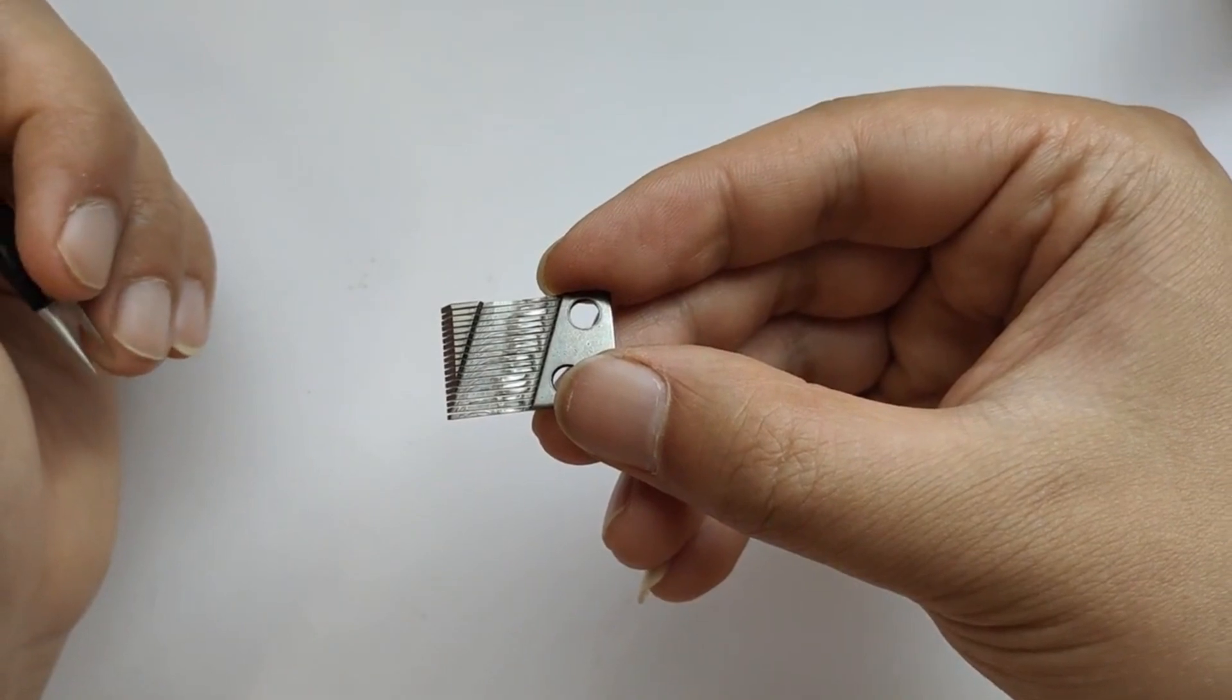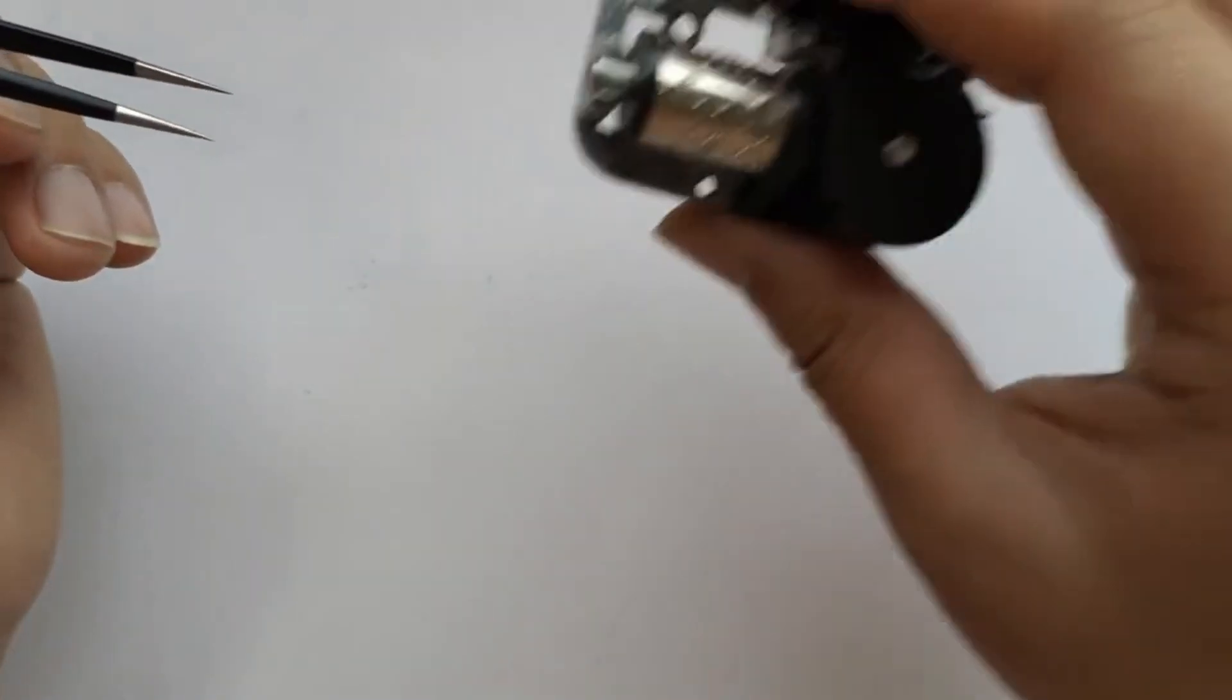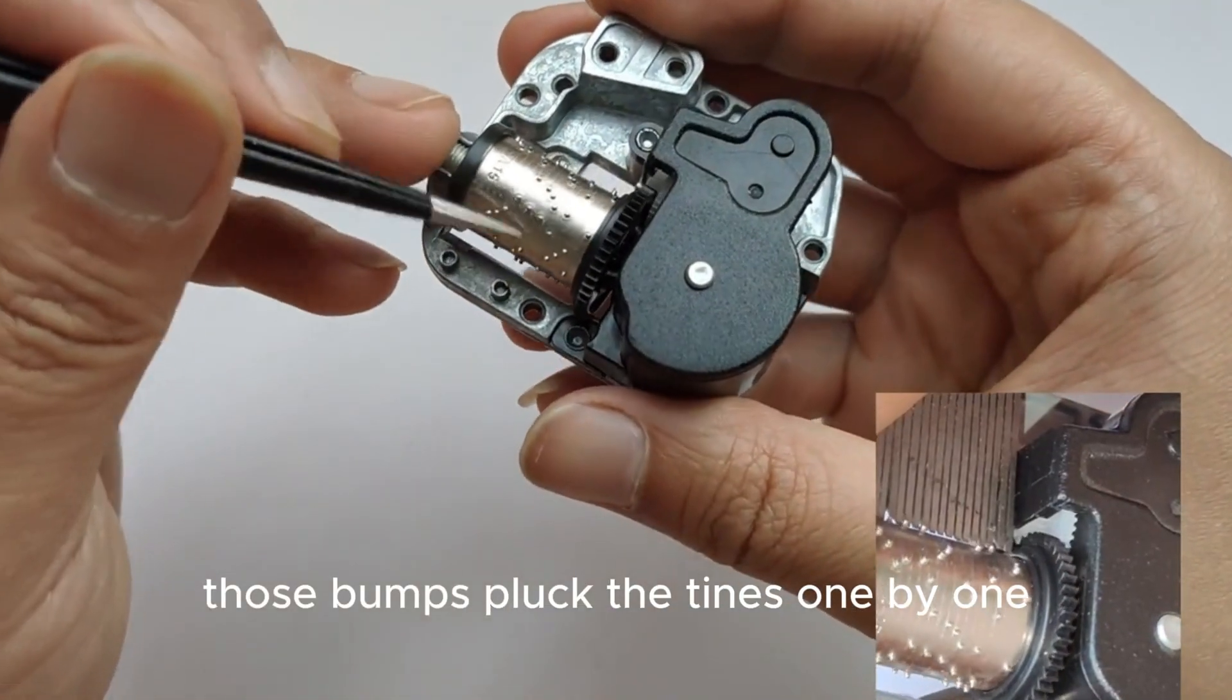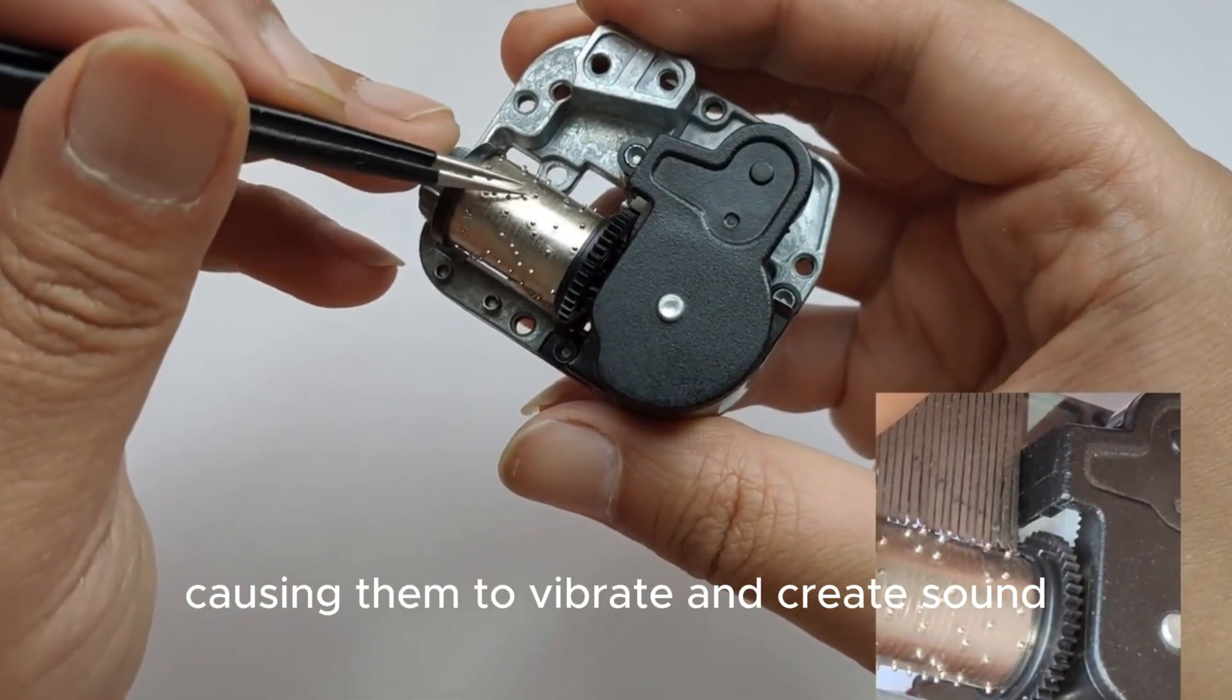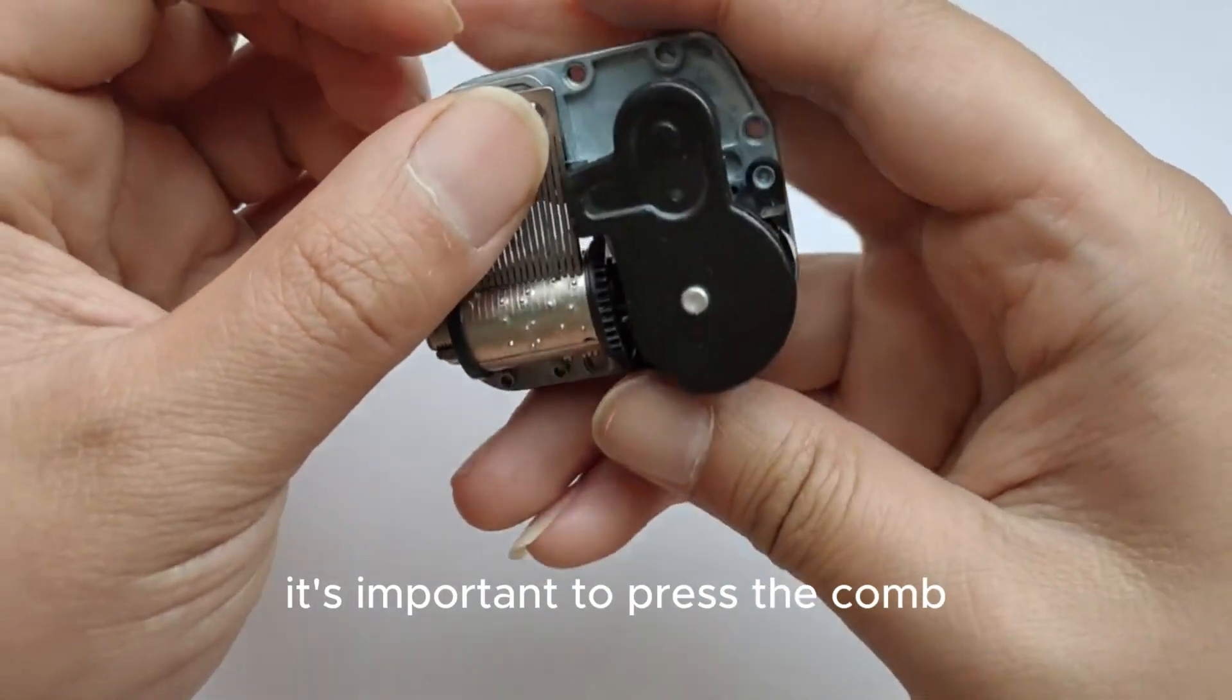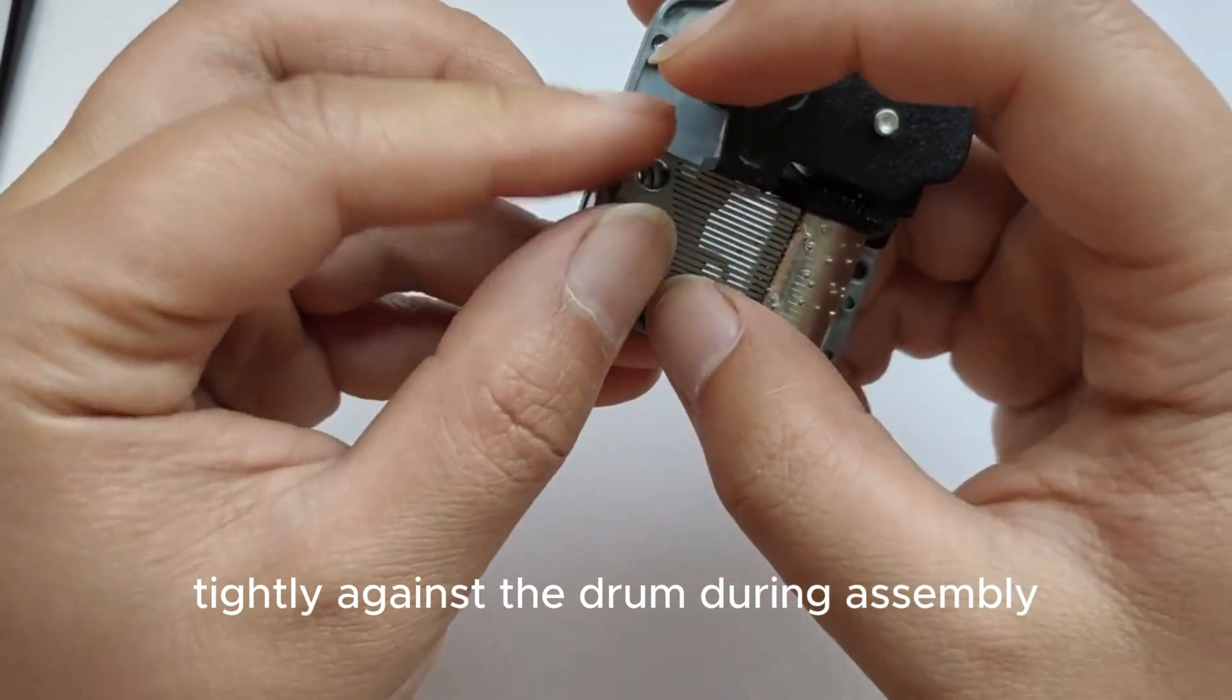Here's the drum. See those little bumps? As the drum spins, those bumps pluck the tines one by one, causing them to vibrate and create sound. It's important to press the comb tightly against the drum during assembly, otherwise no sound will come out.